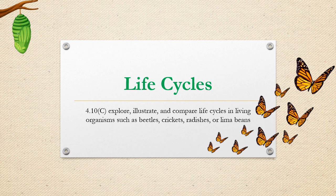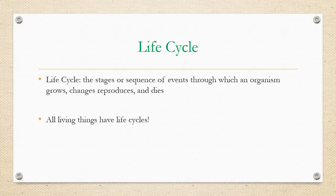Today we're talking about life cycles, and this is awesome because it is our final science mini lesson of the school year. Life cycles are the stages or sequence of events where an organism grows, changes, reproduces, and dies. All living things have life cycles. We're just going to talk about a couple of examples, but every living thing has a life cycle.